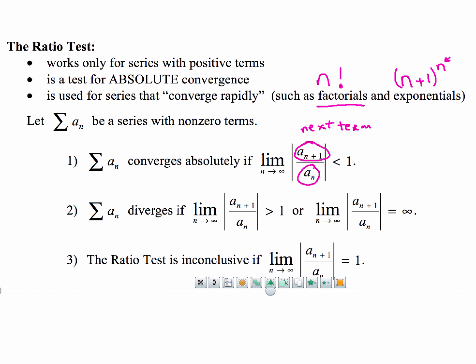if we do this limit process and we end up getting one, then we've got no idea, and we're going to have to do something else. So you can't use ratio test, we're going to have to move on to another test. So let's go ahead and take a look at our first example.